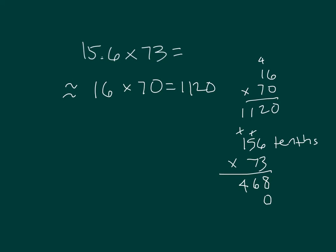Place a 0. 7 times 6 is 42, 2, regroup of 4. 7 times 5 is 35, plus 4 is 39, 9, regroup of 3. And 7 times 1 is 7, plus 3 is 10.